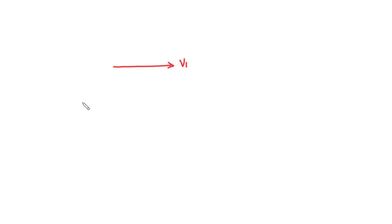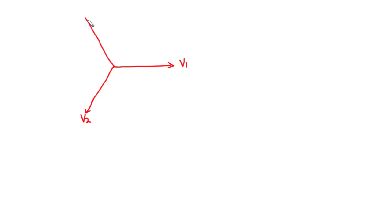Representing the three source voltages in the phasor diagram, we have V1 along the horizontal axis, and that's going to be the reference phasor. Moving in the clockwise direction, we have V2, which is physically spaced from V1 by 120 degrees, and then V3, which is also physically spaced by 120 degrees from V2 as well as V1. Thus, the phase angle between the three source voltages is 120 degrees.